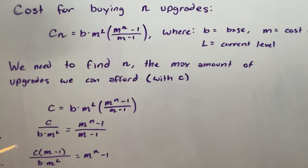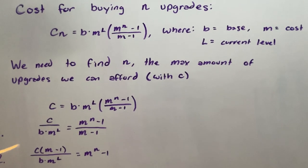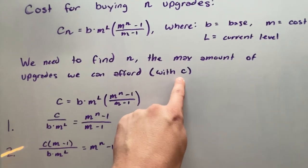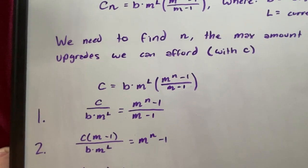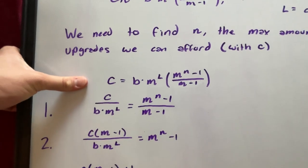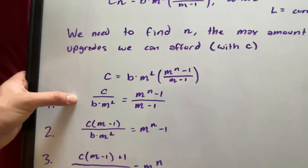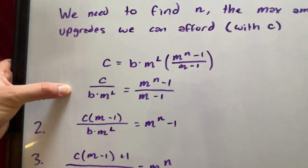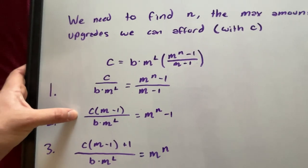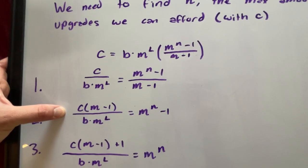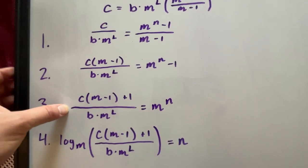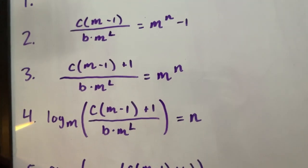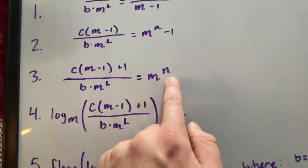We need to find what n is, which is the max amount of upgrades we can afford based on c. We will use that by just rewriting our equation. We first start off with this, and then we divide both sides by b times m to the power of l. Then we multiply both sides by m minus one, and then we add one to both sides.